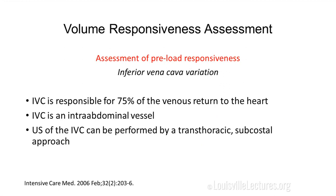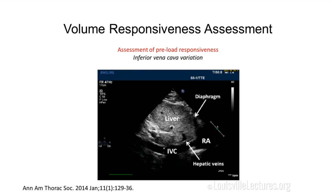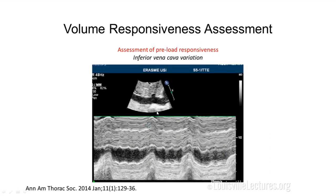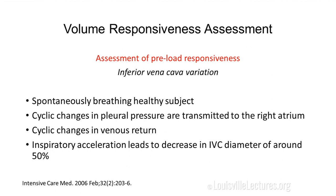The inferior vena cava variation is something we have been doing frequently with echocardiography in the ICU. The IVC is responsible for 75% of venous return to the heart, and it's an intra-abdominal vessel. Ultrasound of the IVC can be performed via the transthoracic subcostal approach — most of what we do in the ICU. There was a study in non-mechanically ventilated, spontaneously breathing patients that looked at IVC variation to predict fluid responsiveness, which is particularly interesting since all the measurements discussed so far are valid only in mechanically ventilated patients.